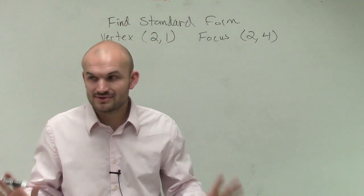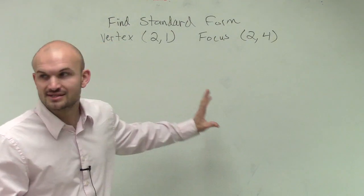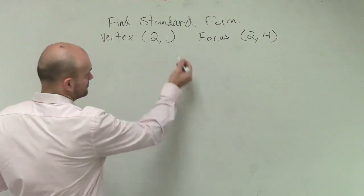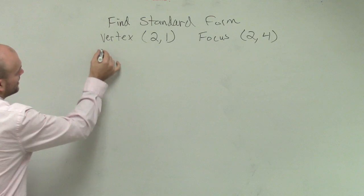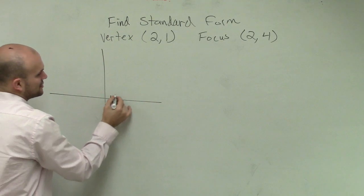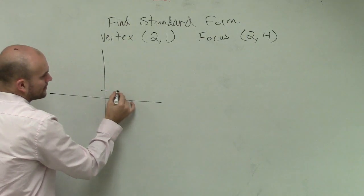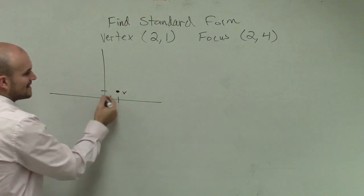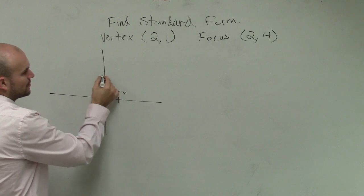So the best thing I would tell you guys to do first is to plot the points and see which one would make sense. So let's plot the two points here. So if I have a vertex at 2 comma 1, and then I have a focus at 2 comma 4.